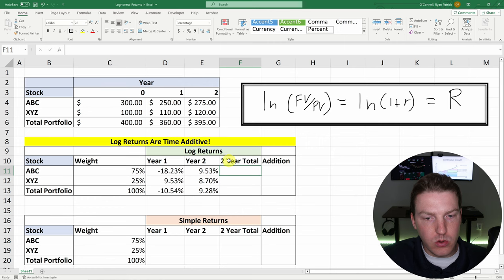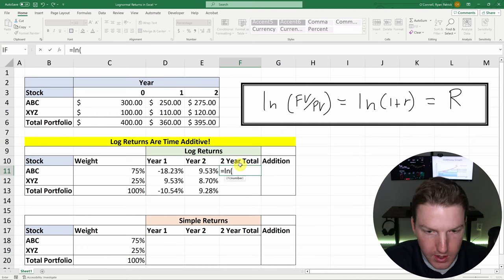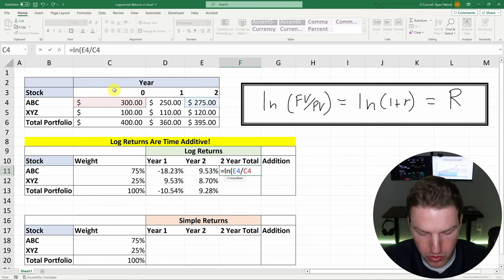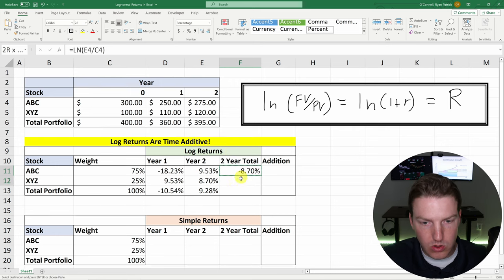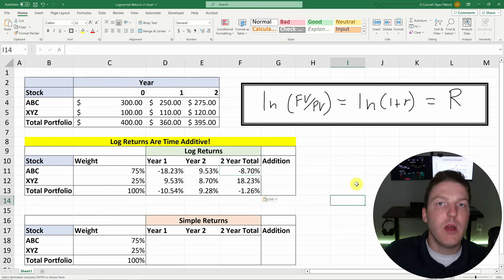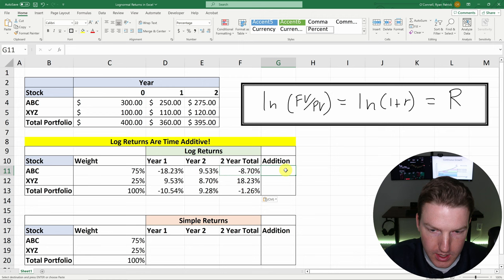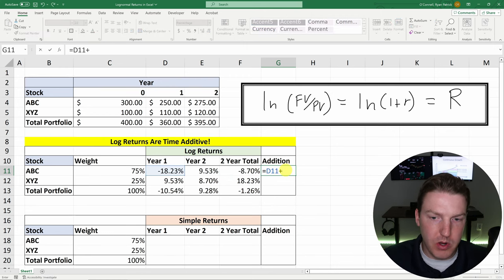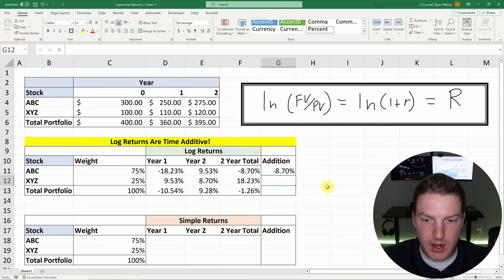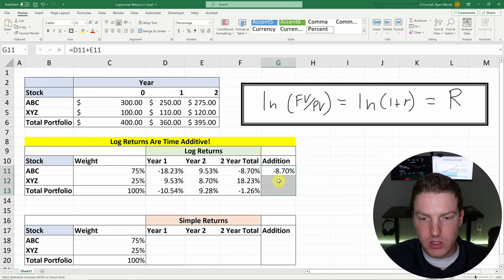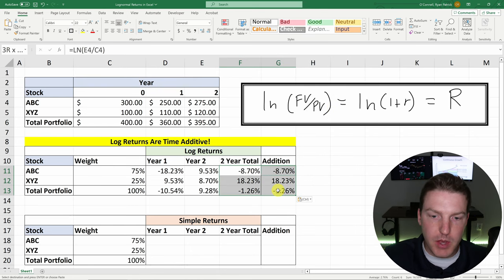And then one thing we can do is find the two year total using this log return. So let's do equals LN. The total return in the whole two year period would have been that future value at two years divided by that present value at the beginning, which was 300, enter. Let's do control C paste formulas. And so now here's the magic of why log returns are so useful. I can just simply set this equal to the log return from year one plus year two. And it matches that two year log return exactly. They're both negative 8.7%. So I'll paste formulas. So all of these match exactly.